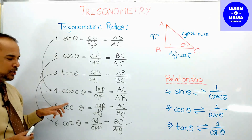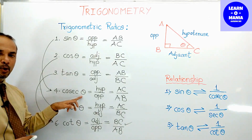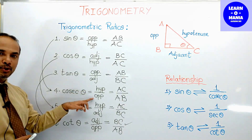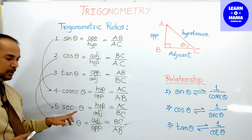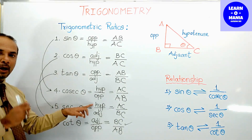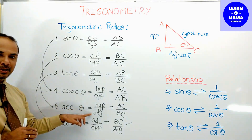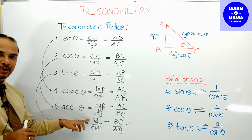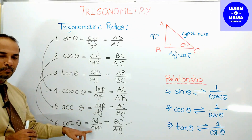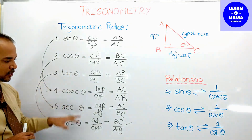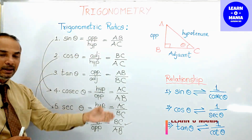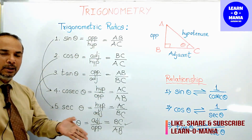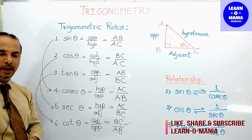Cosec of any angle is hypotenuse upon opposite. Sec of any angle is hypotenuse upon adjacent. Cot is adjacent upon opposite. These relations we need to remember — we don't need to memorize the specific names and values, because those change with every triangle.